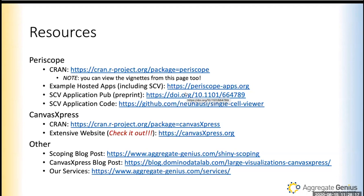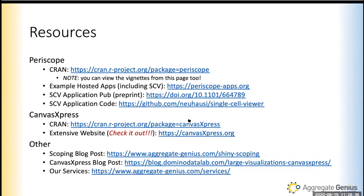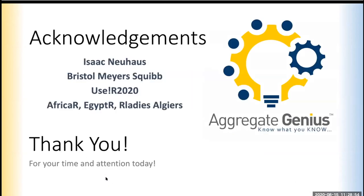CRAN is the primary repository for these packages. You're welcome to check out the GitHub repositories as well, but remember GitHub may have differences as a package in development, and it may or may not work. Please use the CRAN package when developing Shiny apps. The Single Cell Viewer has a preprint publication if you want to read about the science behind it. You can try it out at periscopeapps.org where we host some Shiny apps. Canvas Express is also on CRAN and at canvasexpress.org.